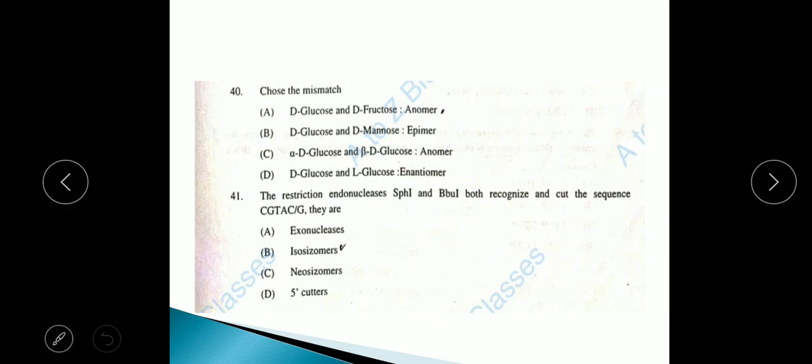Question 40: Choose the mismatch. D-glucose and D-fructose anomers, D-glucose and D-mannose epimers, alpha-D-glucose and beta-D-glucose anomers, D-glucose and L-glucose enantiomers. The mismatch pair is A. The answer is A, depending upon the structure of carbon chain.